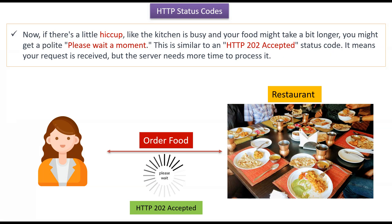Now if there is a little hiccup, like the kitchen is busy and your food might take a bit longer, then you will get a polite message saying please wait for a moment. This is similar to HTTP 202 Accepted status code, which means your request is received but the server needs more time to process it.